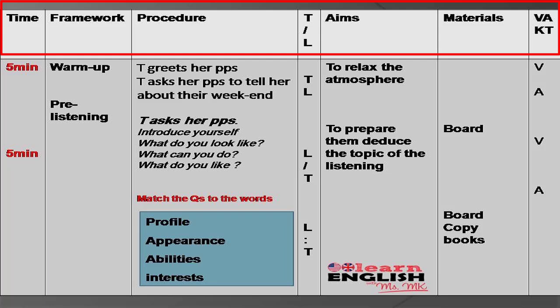Then you have materials — what you use in your lesson: the board, the copybook, the textbook, handouts, data show — everything you use should be mentioned in your lesson plan. Then you have VA Katie, which stands for the learning styles of your pupils. There are pupils who are auditive, visual, etc. In a listening lesson plan, your learners are going to be more auditive than tactile or kinesthetic.